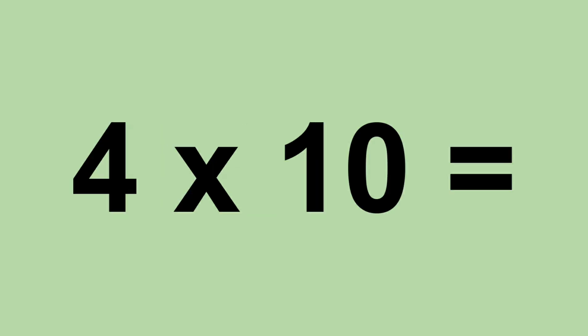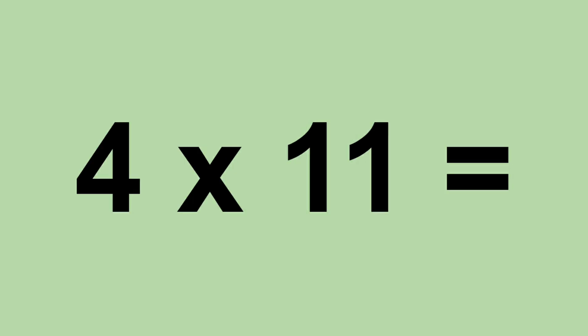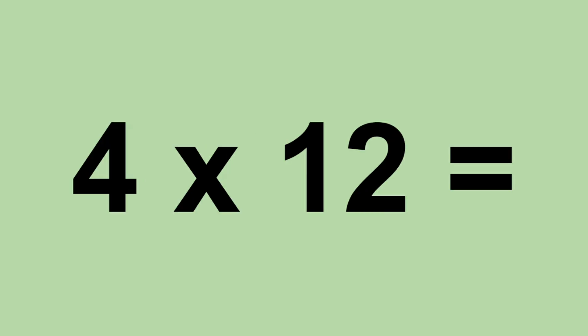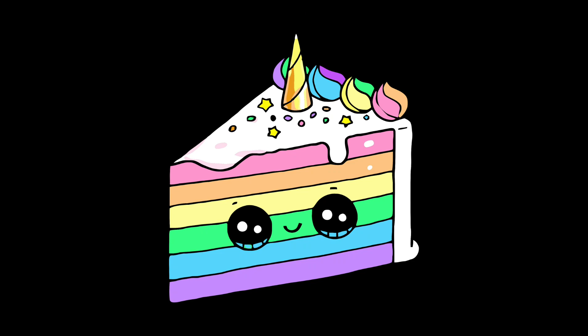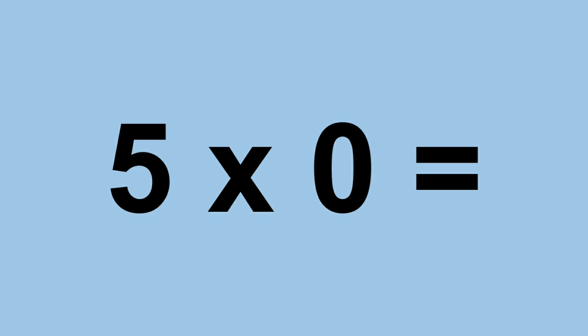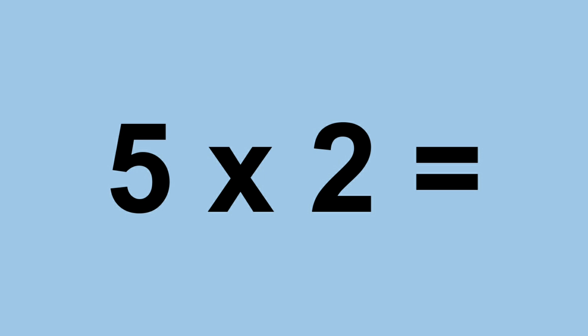Four times ten equals forty. Four times eleven equals forty-four. Four times twelve equals forty-eight. Five times zero equals zero. Five times one equals five. Five times two equals ten.